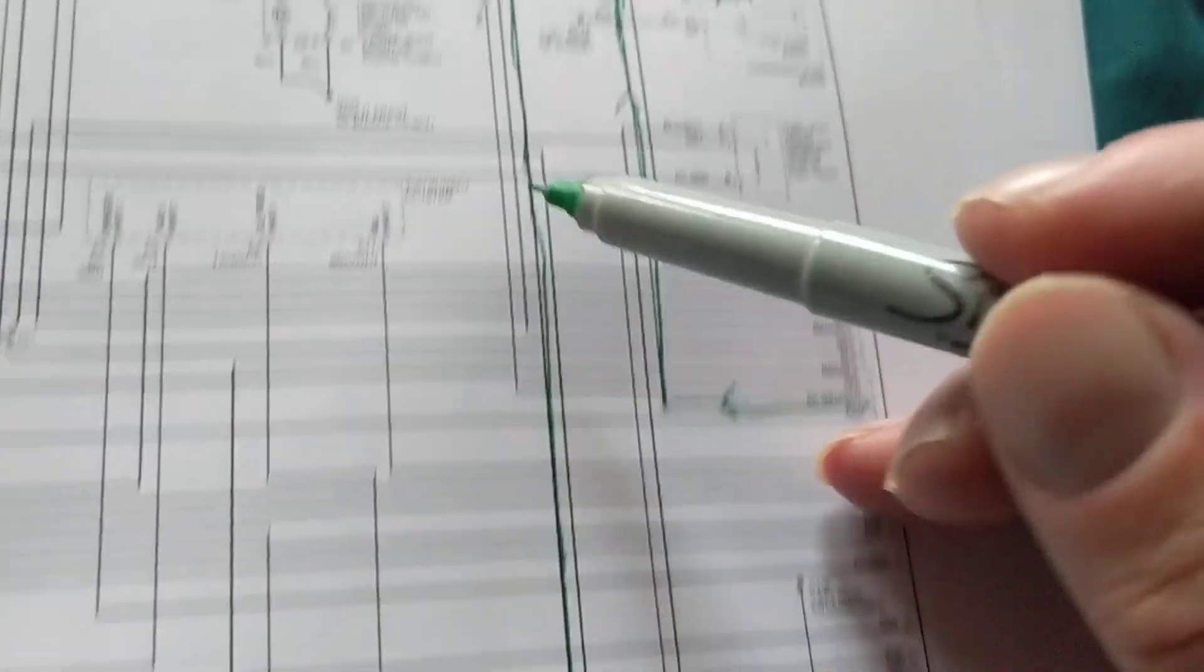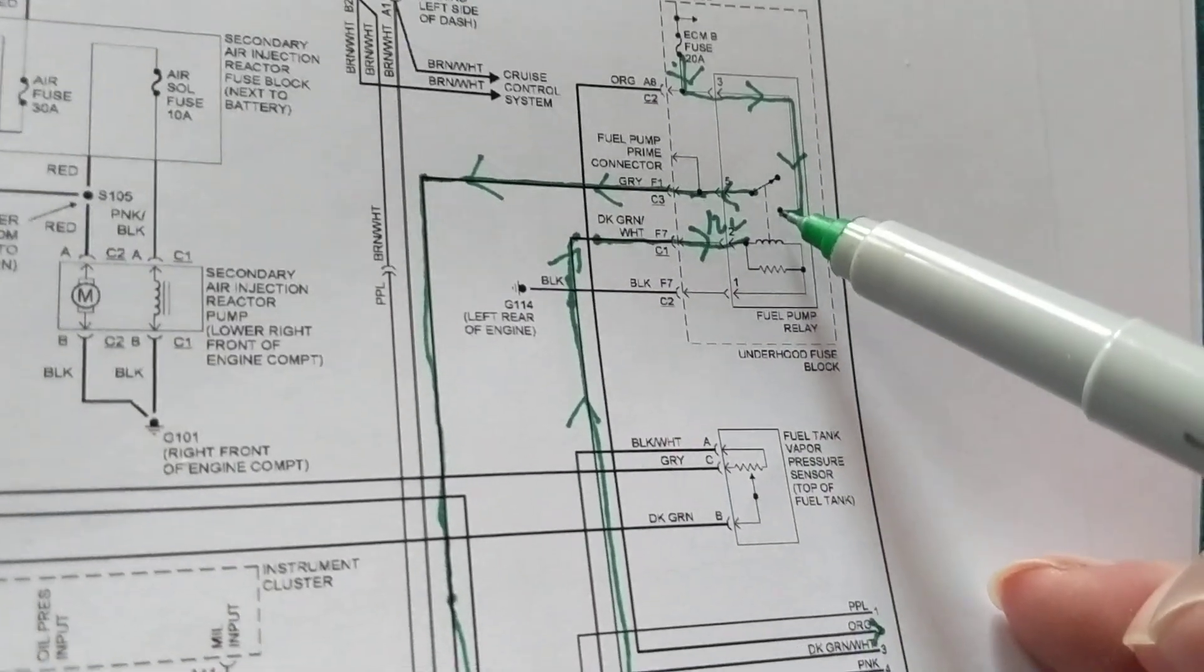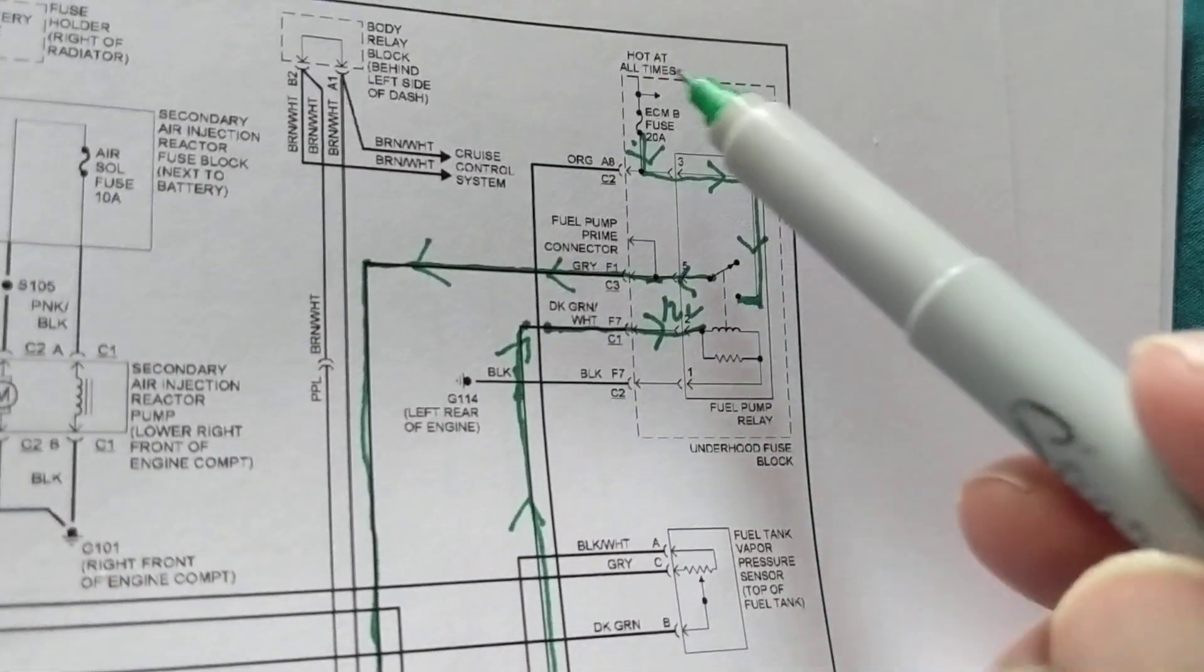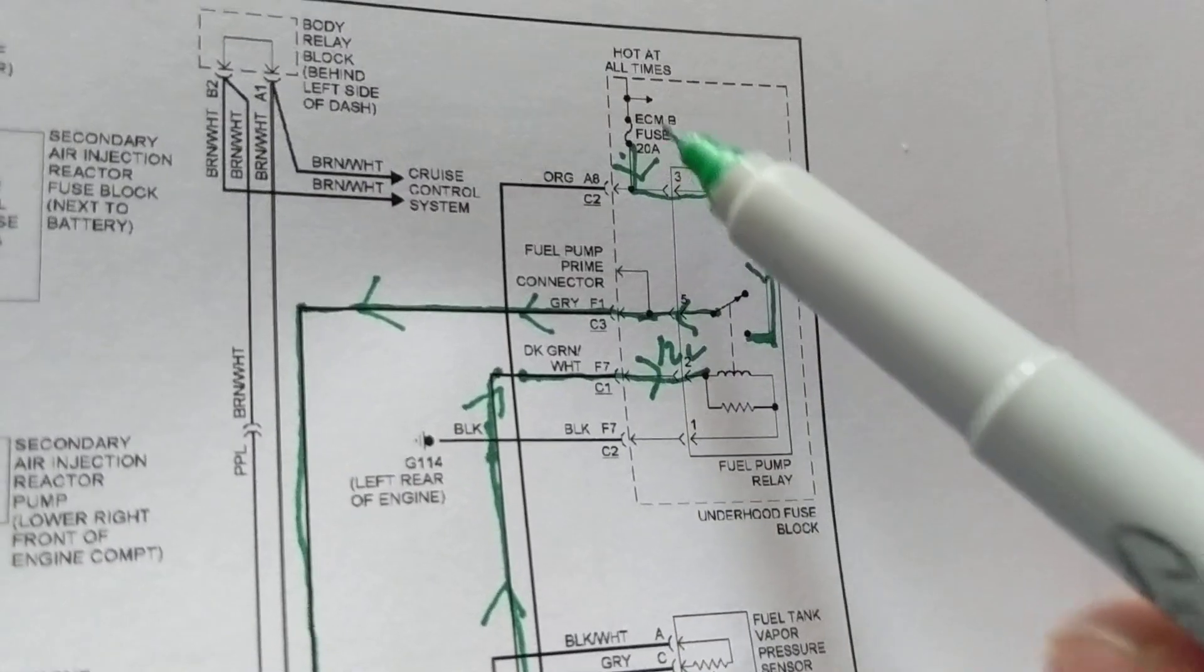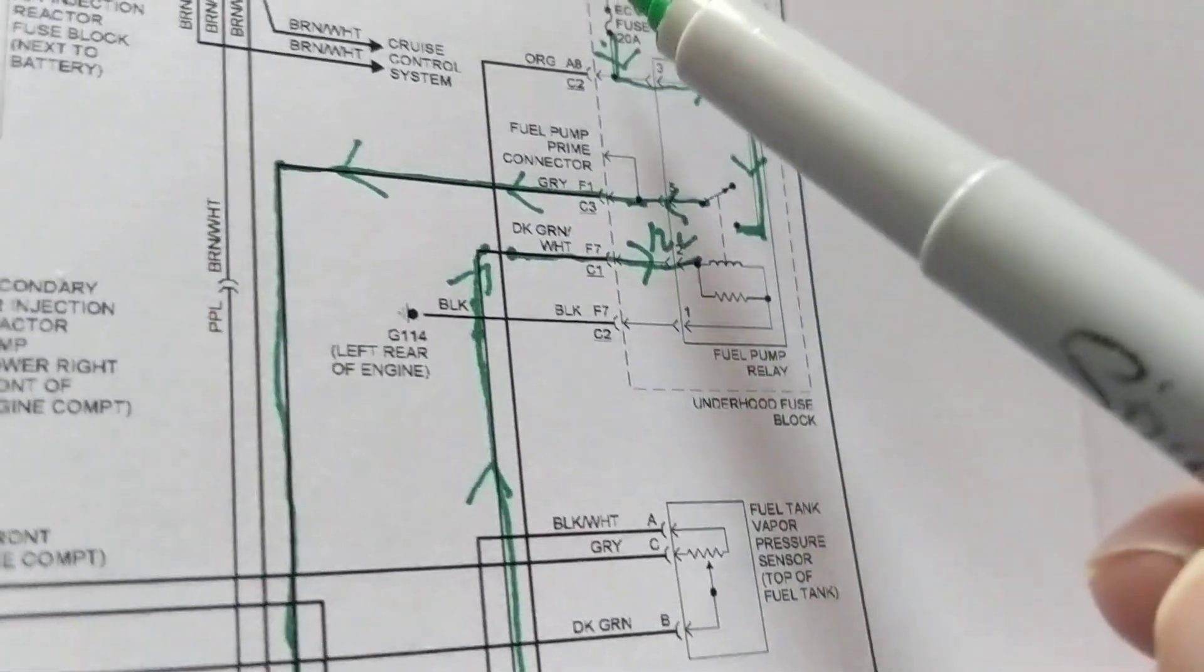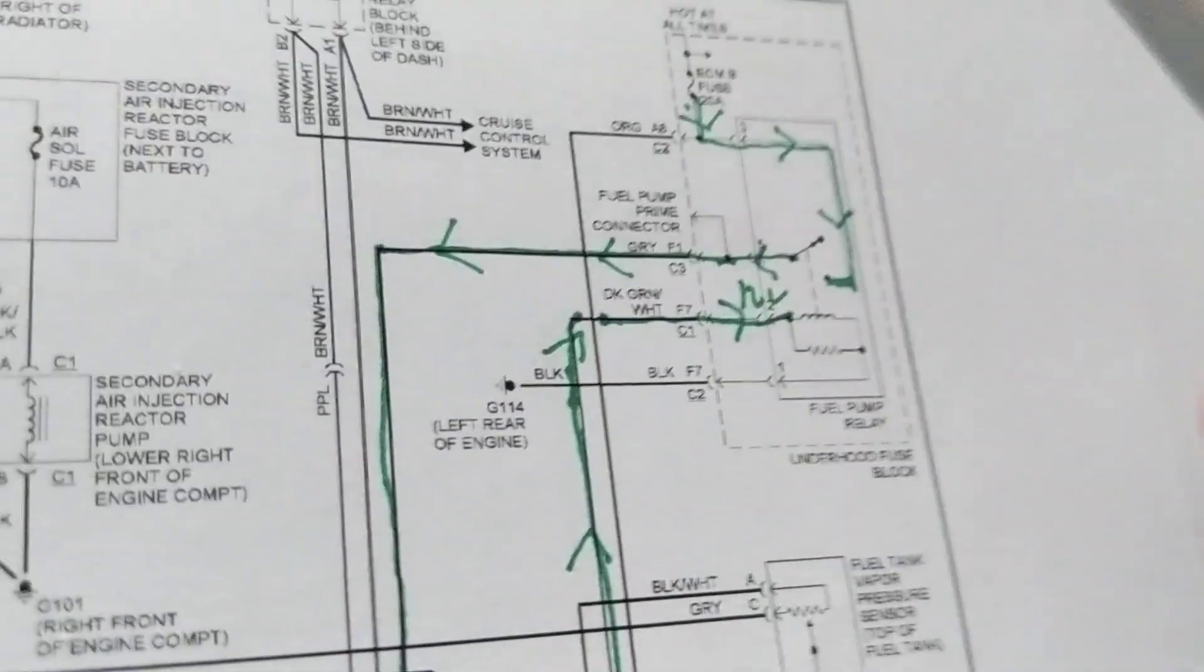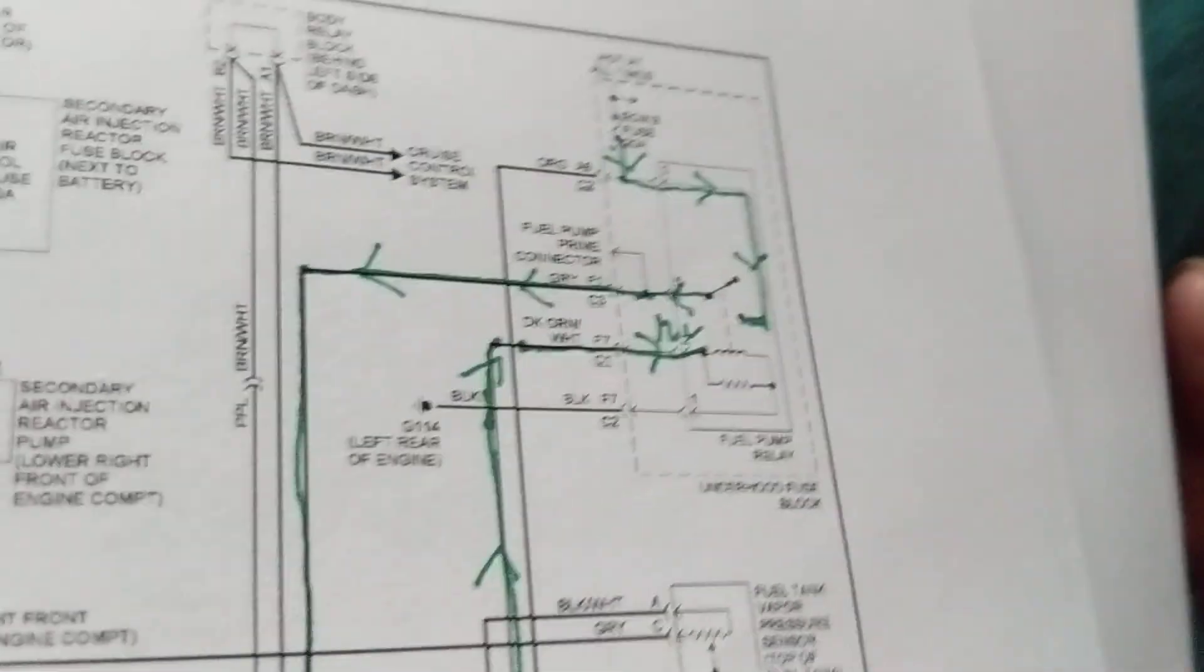This is a fuel pump coming from the relay, this is the load side. Before you did that, you changed obviously the fuses. As you see over here, there's no fuel pump relay that says fuel pump relay fuse, whatever 20 amps. It says ECM fuse, and eventually that feeds the fuel pump relay. If you don't have the diagram, you wouldn't know it.